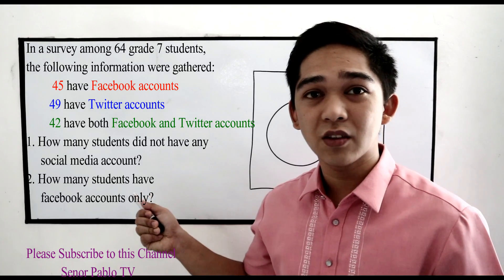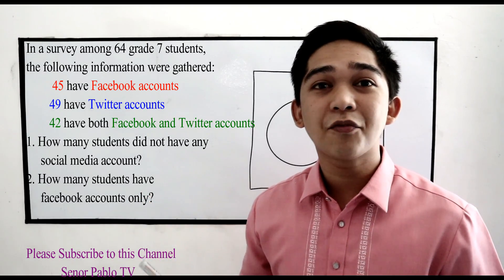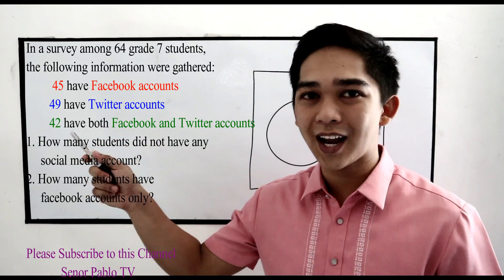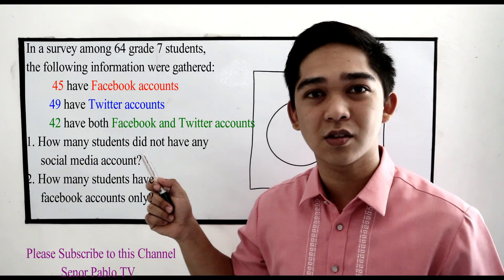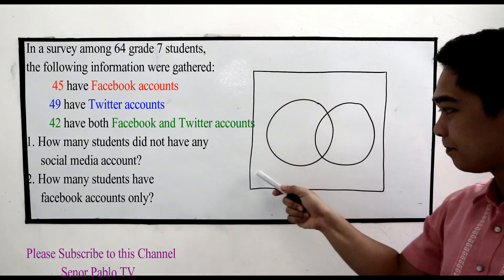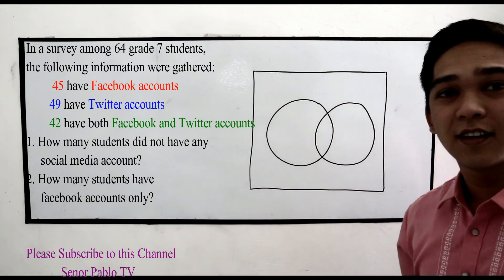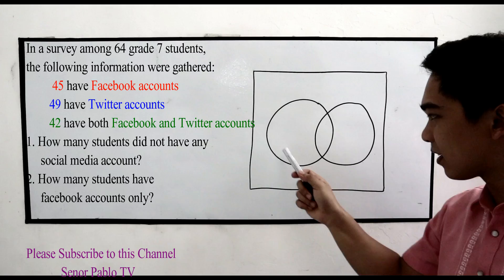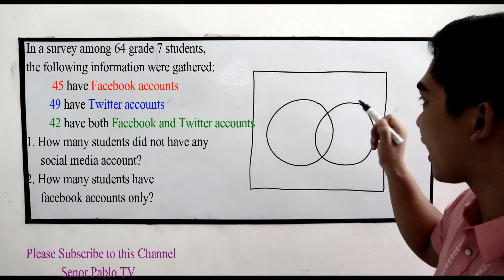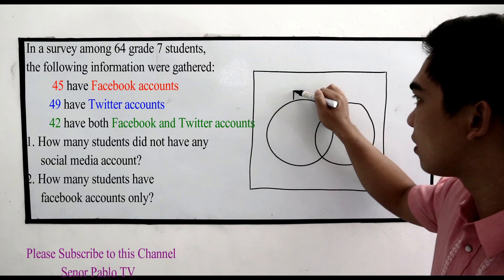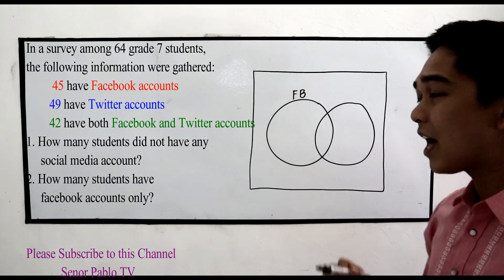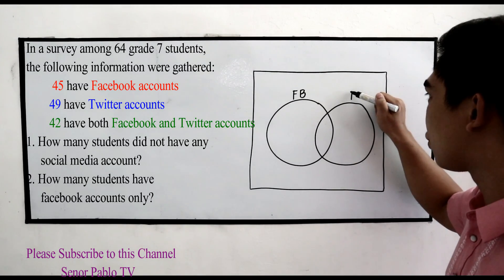Notice that in our given problem, we have two different categories. We have the Facebook accounts and the Twitter accounts. That's why in our Venn Diagram, we have two circles. Let us name the first circle the Facebook category, and the other circle is for Twitter.